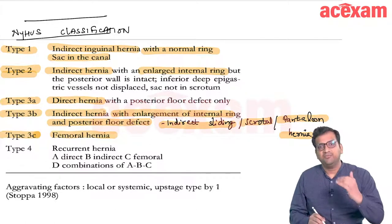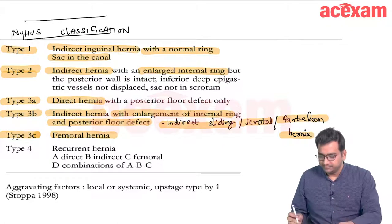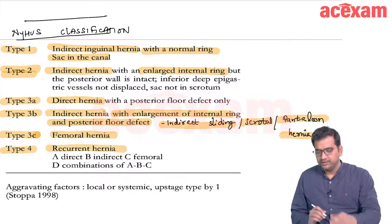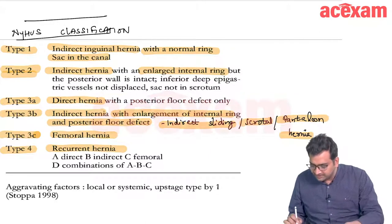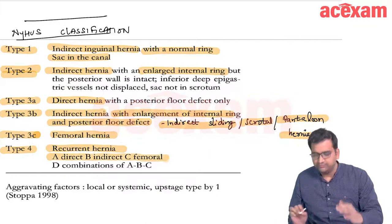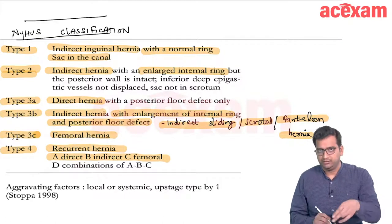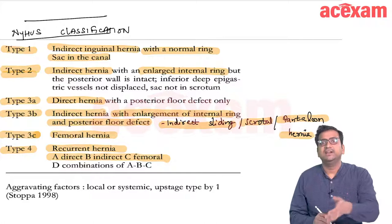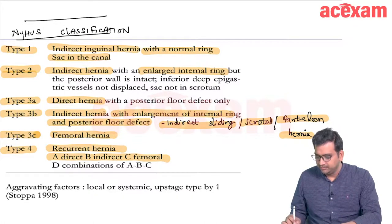Type 4 is recurrent hernia. Within type 4: 4a is direct, 4b is indirect, 4c is femoral, and 4d is any combination of direct, indirect, or femoral hernia.